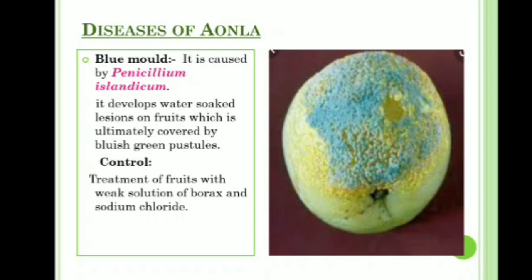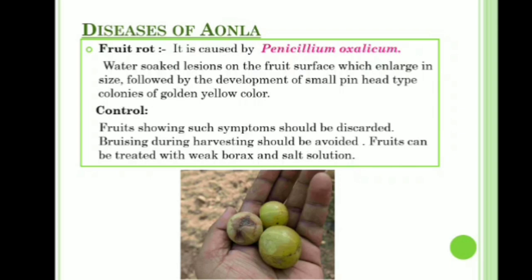Fruit rot is caused by Penicillium oxalicum. Symptoms: water-soaked lesions on the fruit surface which enlarge in size, followed by development of small pin-head type colonies of golden yellow color. Control: fruits showing symptoms should be discarded, bruising during harvesting should be avoided, and fruits can be treated with a borax and salt solution.